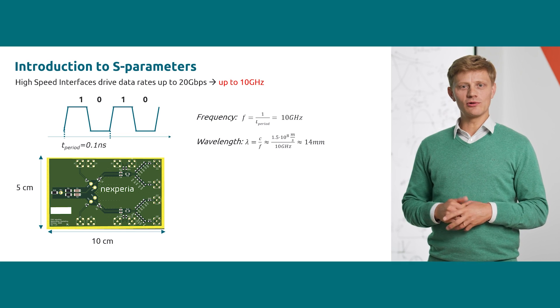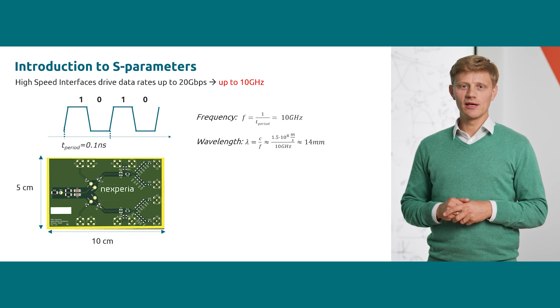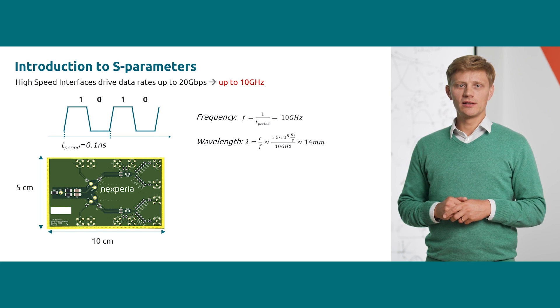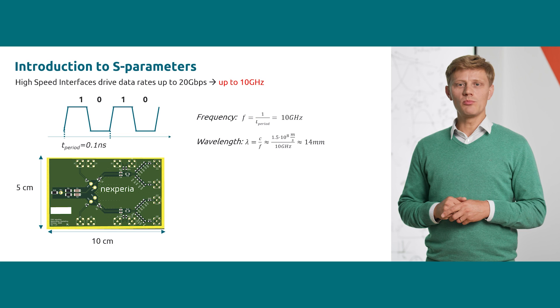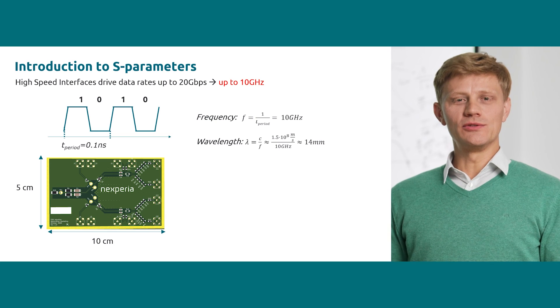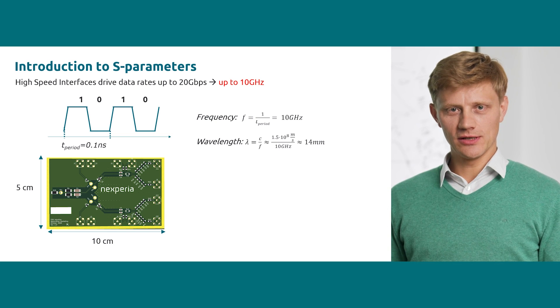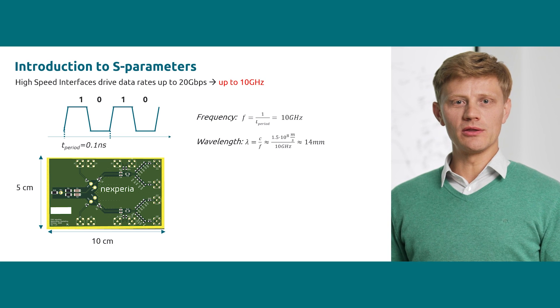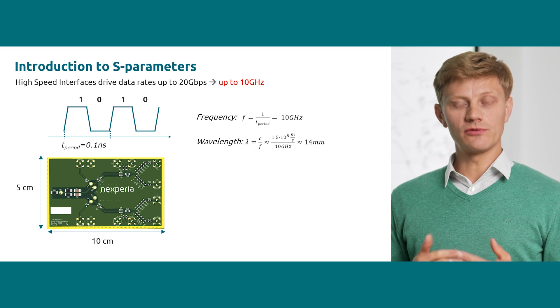For example, for a network of 20 gigabit per second and hence frequency of 10 gigahertz, the time period of a periodic signal is only 0.1 nanosecond. Using the formula for the speed of the signal on the PCB we can calculate the wavelength which results in 14 millimeters.